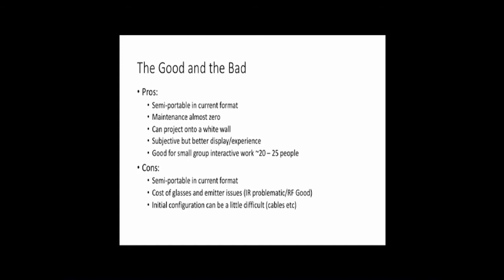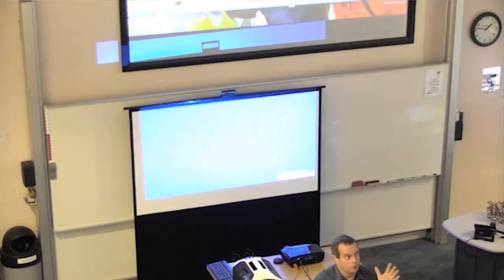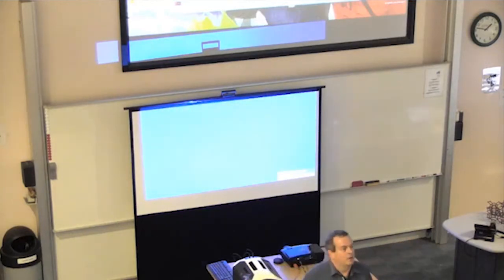The cons are semi-portable in current format, and the cost of the glasses. The IR transmitters can be a little temperamental because you have bodies in the way. The radiofrequency ones are very good. With active systems, this projector is going at 120 hertz refresh rate. These glasses synchronize through either an infrared signal or a radiofrequency signal. They're LCD shutters, so they switch on and off at 60 hertz. Your brain at 60 hertz, just like at 24 frames per second, sees continual motion. If anyone has epilepsy, they shouldn't really use these because of the flicker frequency.